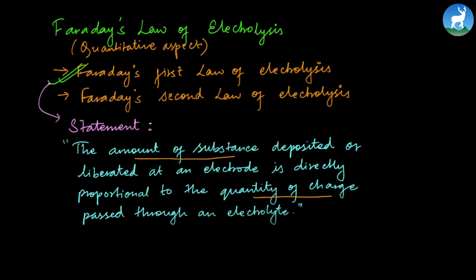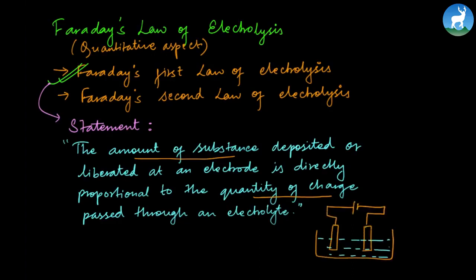We must remember anode and cathode. At the anode, which is the positive electrode, substance is liberated because oxidation occurs — there is a loss of electrons. At the cathode, substance is deposited. So substance is either liberated at the anode or deposited at the cathode.